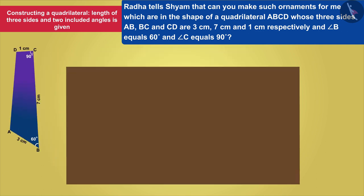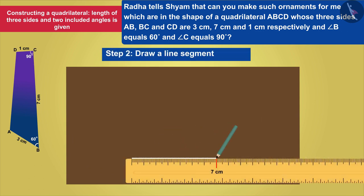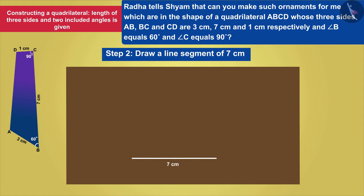Since he knows the value of angle B and angle C, he selects the side BC, draws a line segment of length 7 cm, and gives it the name BC.